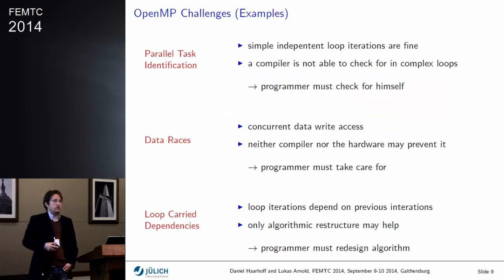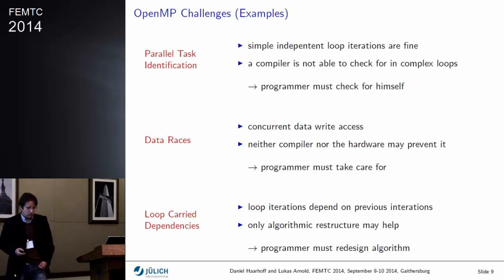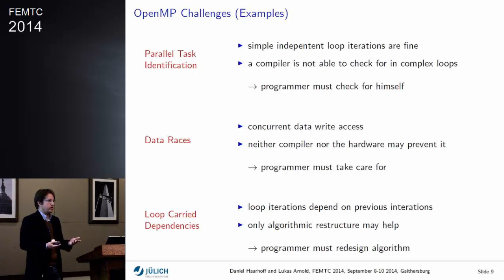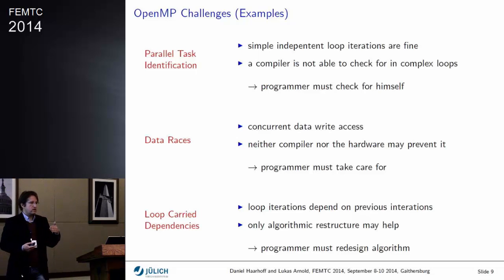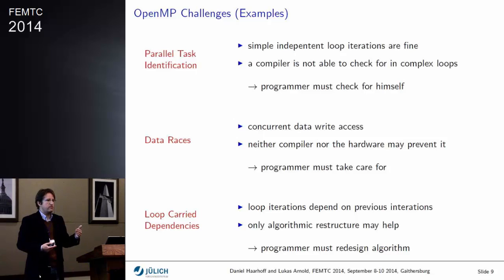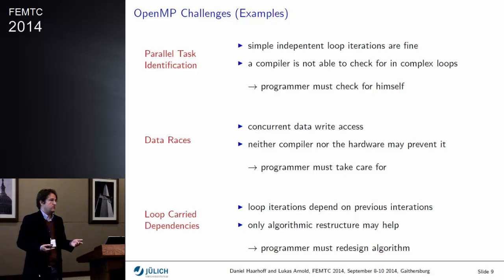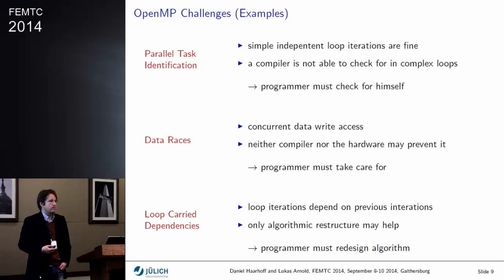In reality, it isn't that simple. There are a couple of challenges with OpenMP. I will show you three of them which we faced during the inclusion of OpenMP in FDS. The first is parallel task identification. If you've got tasks which are independent of each other, you can run them in parallel, but you need to know they are independent. Whenever a loop calls another function and the compiler doesn't know what's happening in that function — maybe some parts of memory will be touched that influence other iterations — it won't do any parallelization because it isn't sure.